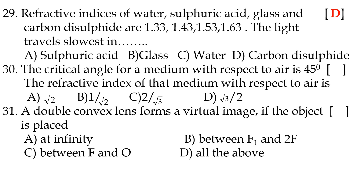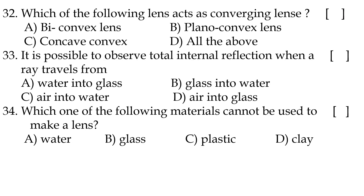Thirty-first question: a double convex lens forms a virtual image if the object is placed option C — between F (focus) and O (optic center). Thirty-second question: which of the following lenses acts as a converging lens? Option D, all of the above — biconvex lens, plano-convex lens, and concavo-convex lens.